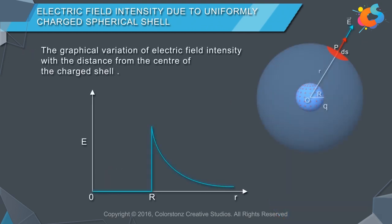The graphical variation of electric field intensity with the distance from the center of the charged shell is as shown below.